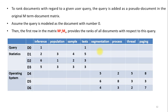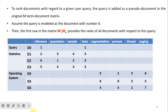To rank documents with regard to a given query, the query is added as a pseudo-document in the original M term-document matrix. The query is modeled as document number 0 (D0), added either at the start or at the end of the matrix — here it is added at the start. For example, if the query contains keywords 'inference' and 'test', those terms get value 1 and all others are 0.